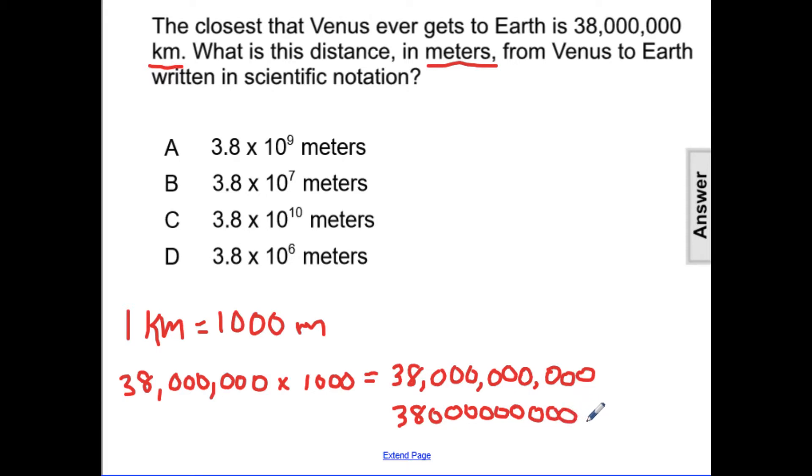We're then going to find the original decimal point is all the way to the right, but the new one we're going to place in between the 3 and the 8 so that our coefficient is greater than or equal to 1, but less than 10, which 3.8 is.